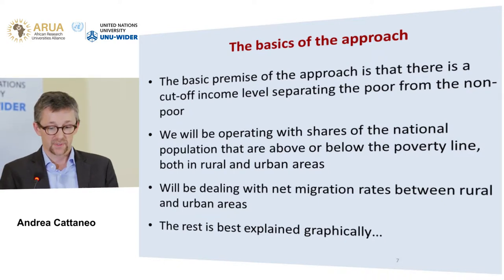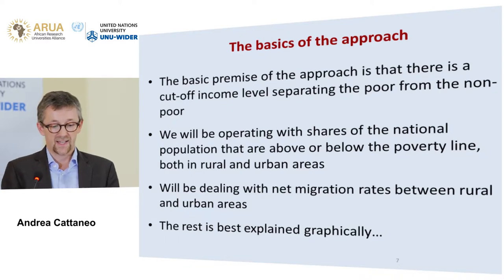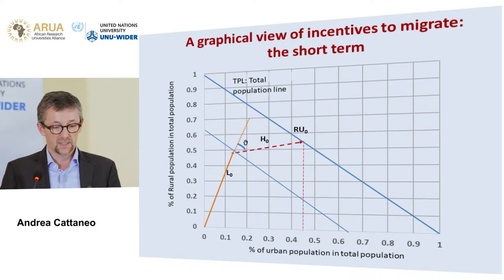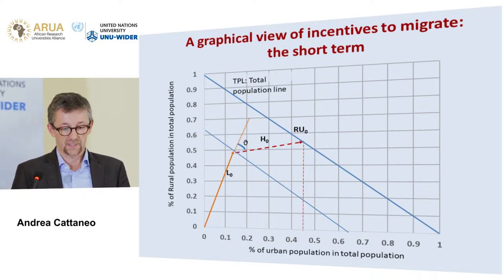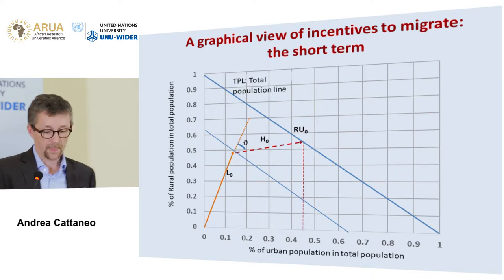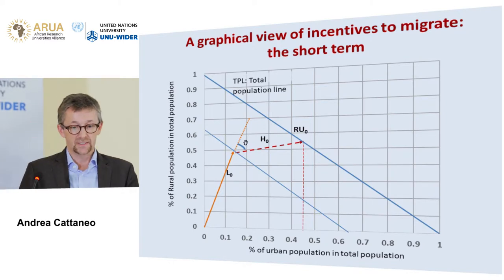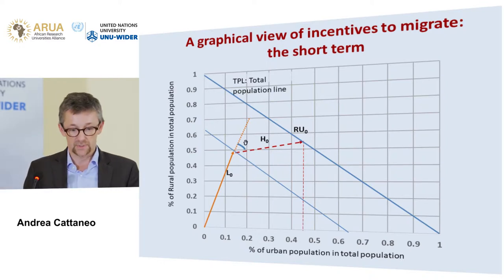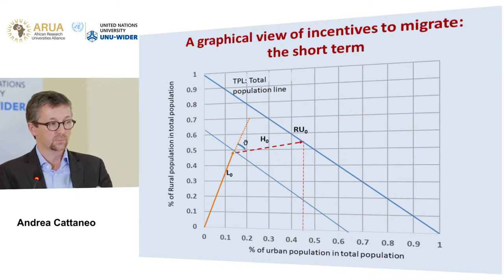The rest is best explained graphically. On the x-axis we have the percent of urban population in the total population; on the y-axis, the percent of rural population in the total. We start by mapping the share of people below the moderate poverty line. For a hypothetical country, 15% are urban poor and 50% are rural poor. This diagonal line is the iso-poverty line — migrating in the short term just moves you along this line, meaning migration per se does not change your income level.